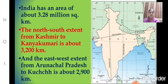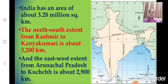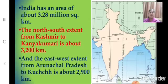Do you know what is the area of our country? India has an area of about 3.28 million square kilometers. The north-south extent, that is from Kashmir to Kanyakumari, is about 3,200 kilometers. And the east-west extent, from Arunachal Pradesh to Kutch, is about 2,900 kilometers.